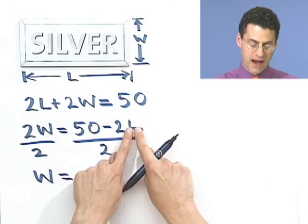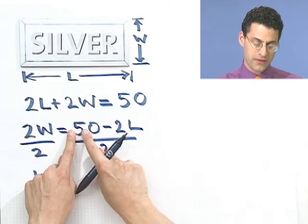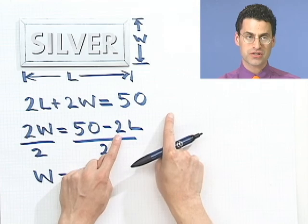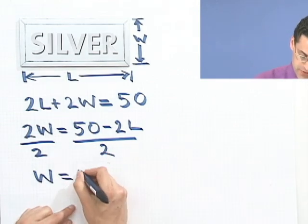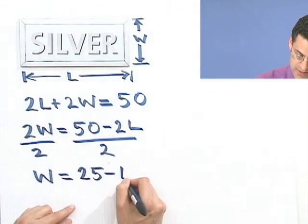Maybe that's the best way to think about it. Let's factor out a 2 on top. I'd be left with 25 minus L all times 2, which cancels. And so I'd be left with just 25 minus L.